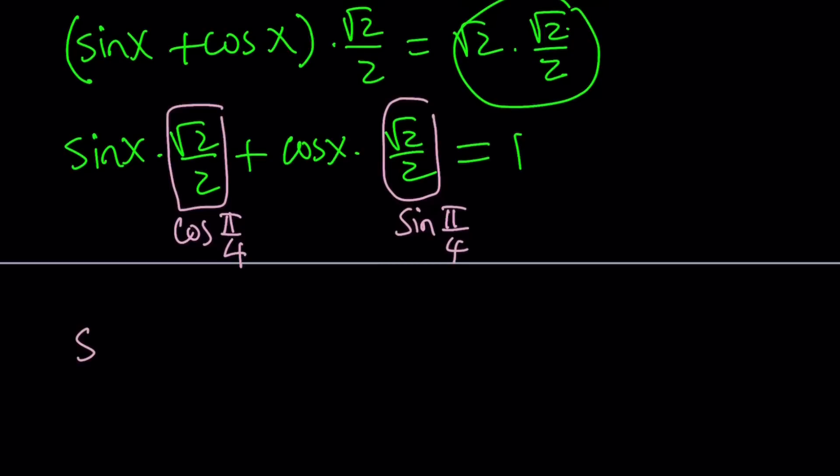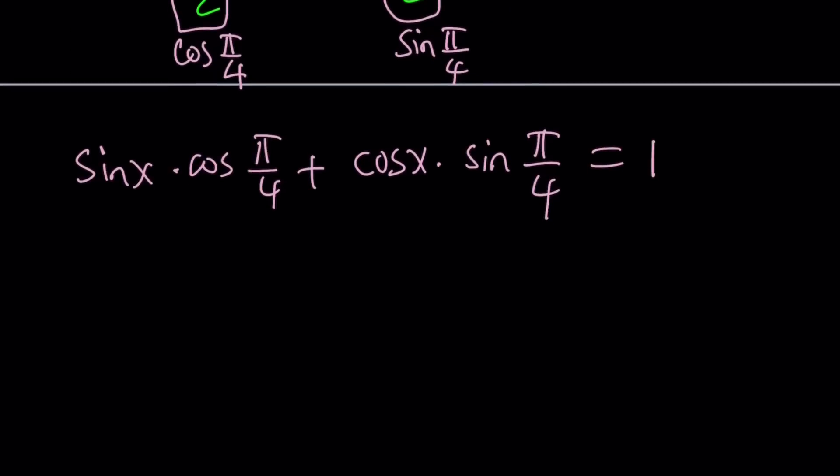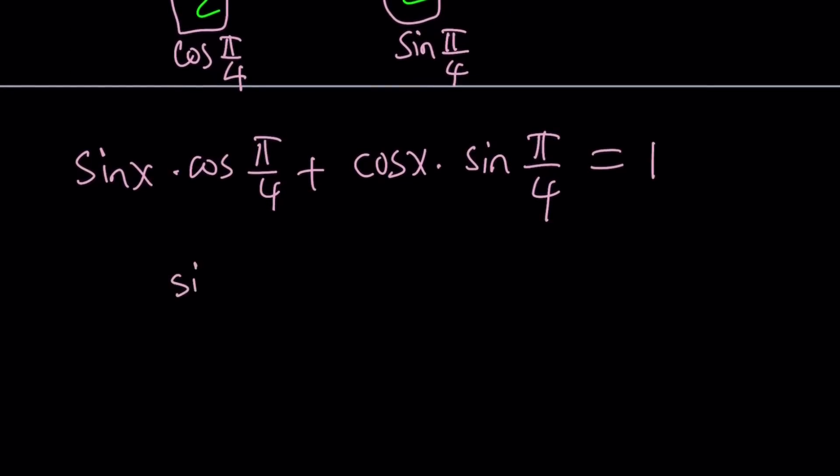Sine x cosine pi over 4... Now, if you look at the left hand side carefully, you're going to notice that it follows the pattern sine alpha cosine beta plus sine beta cosine alpha. Of course, you can switch the sine and cosine here. And this is equivalent to sine alpha plus beta.